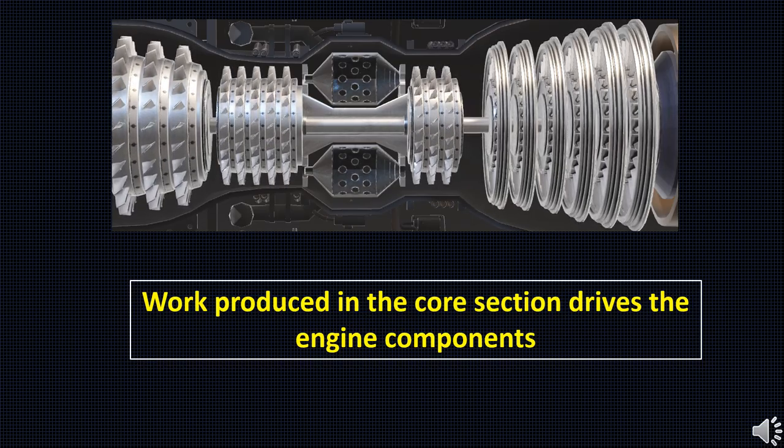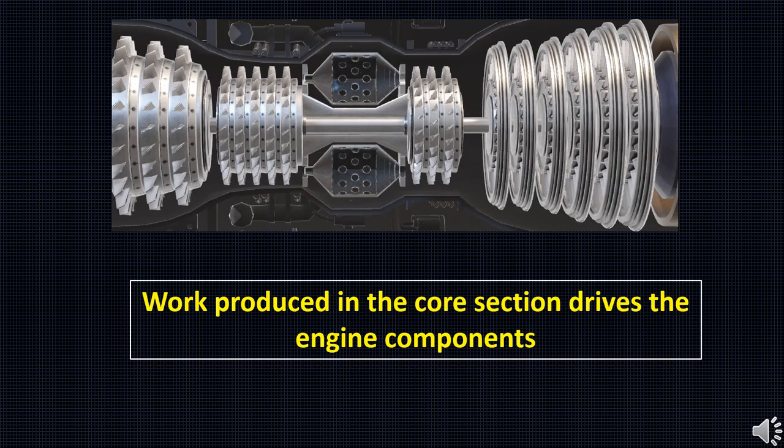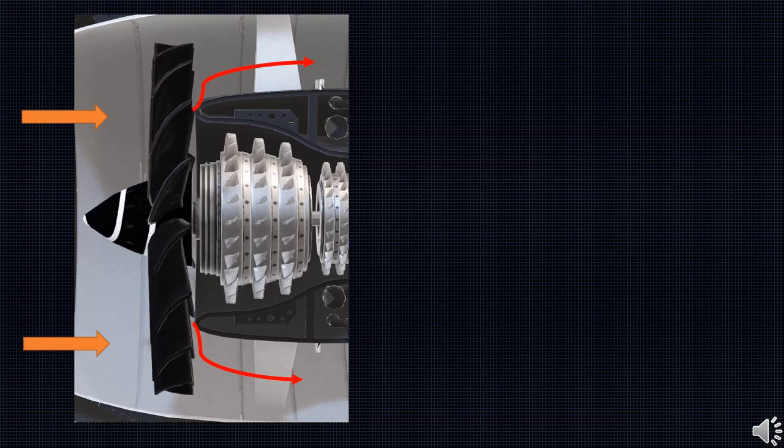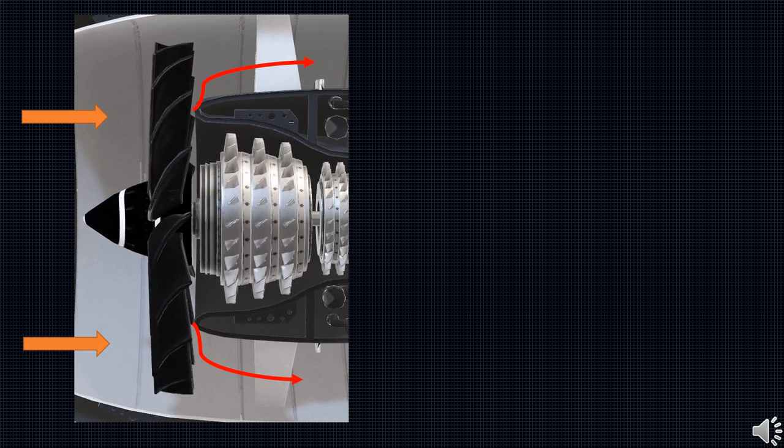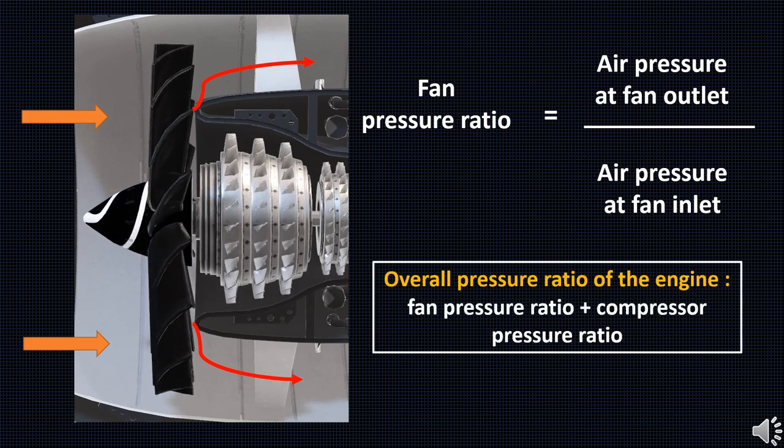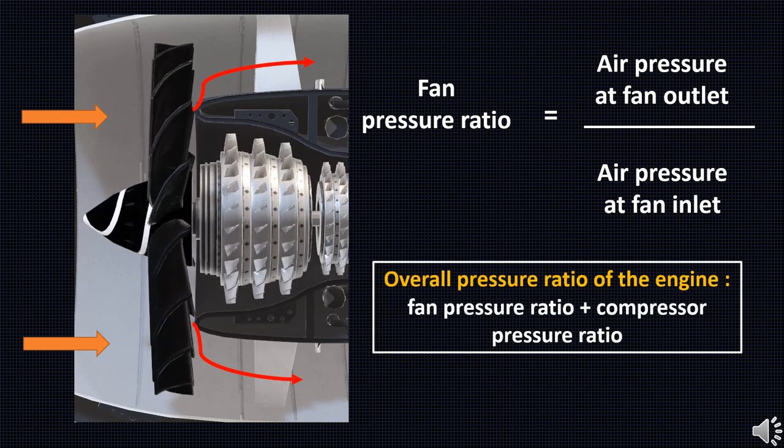Thus, the core section drives the engine continuously. The air passing through the fan experiences an increase in pressure which is given by the fan pressure ratio of the engine. For typical engines it ranges from 1.3 to 1.9.